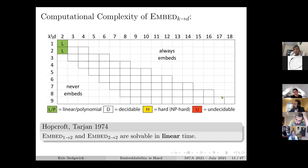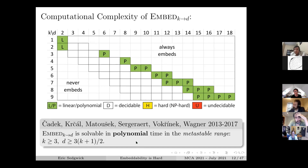For embeddings over here, there's an obstruction called the deleted product obstruction. It's a necessary condition to embed, but for the metastable range it's also a sufficient condition. This is a sequence of papers showing that the deleted product obstruction actually characterizes the complexes that can be embedded - it's an algebraic construction that you can compute effectively in polynomial time. These can all be computed in polynomial time.